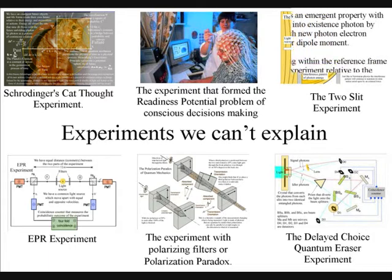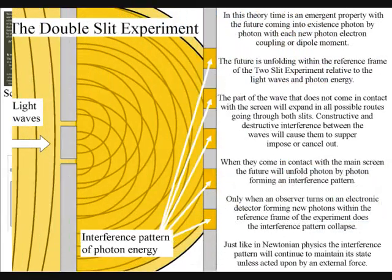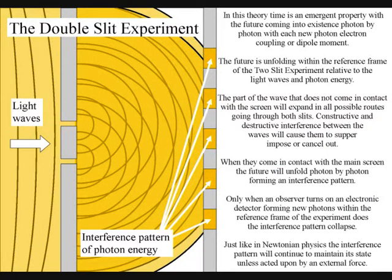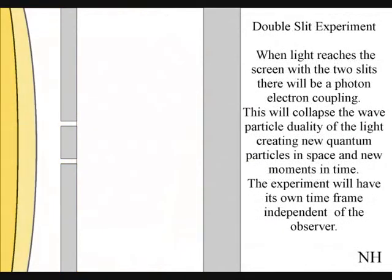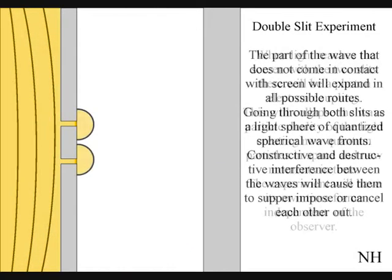I will start with the two-slit experiment. This experiment has been called the only true mystery, but it can be explained if the future is explained as an emergent property. Within the reference frame of the experiment, the future coming into existence, photon by photon.